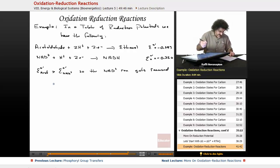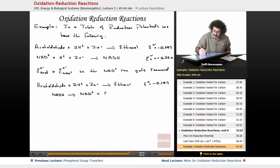What we end up with is the following. We end up with acetaldehyde plus 2H plus plus two electrons goes to ethanol, and its standard is minus 0.197, and the other one gets reversed, so we write it as NADH goes to NAD plus plus H plus plus two electrons, and because we reversed it, we actually end up writing it as now a positive 0.320.